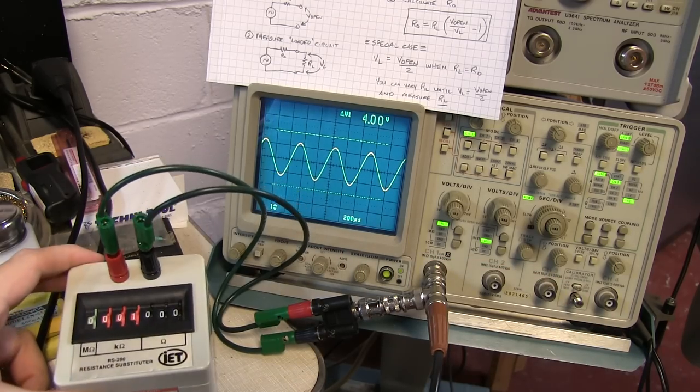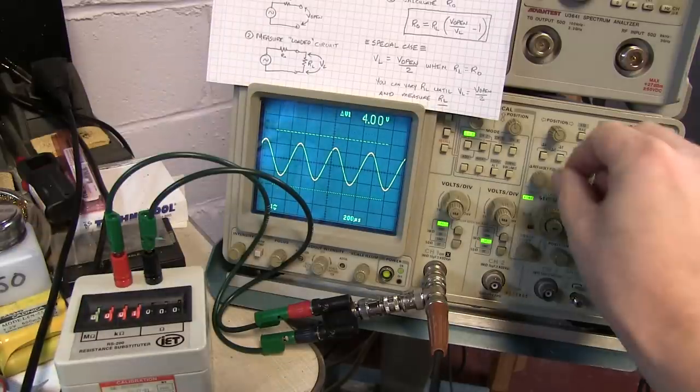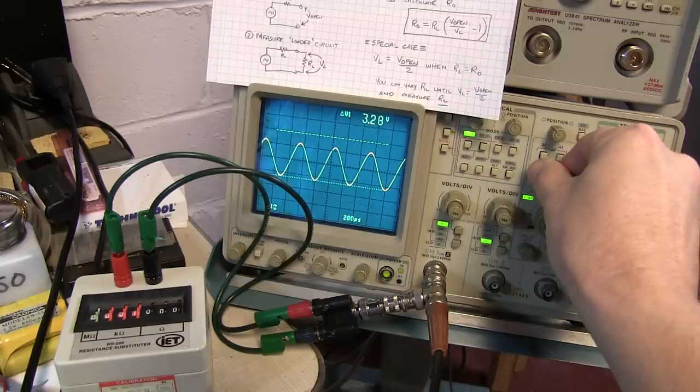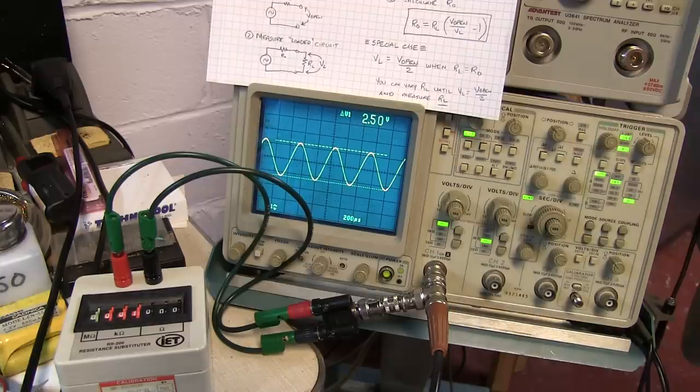So now with that loaded at a thousand ohms I can see my voltage has dropped as you'd expect it would. So what we can do is go make a measurement of that peak to peak voltage in that loaded case.